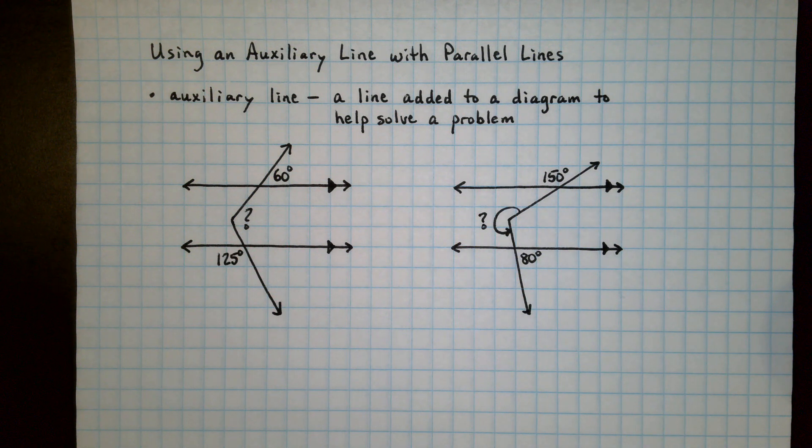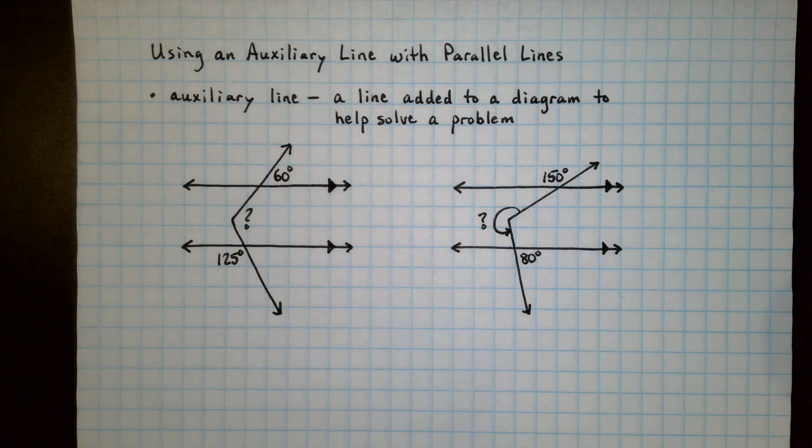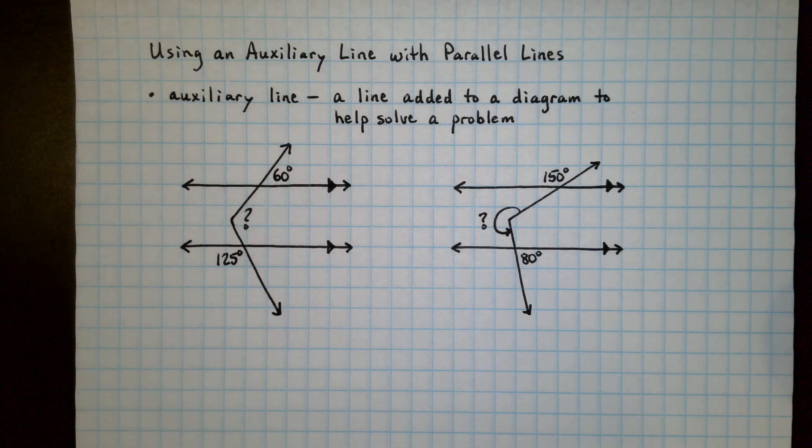Some problems with parallel lines require the use of something called an auxiliary line. An auxiliary line is a line that you add to a diagram that helps you to be able to solve the problem by recognizing some relationships that otherwise you wouldn't be able to see.